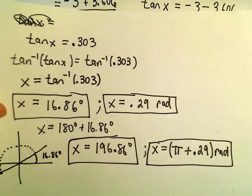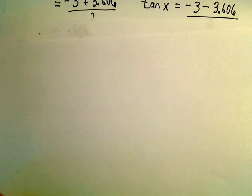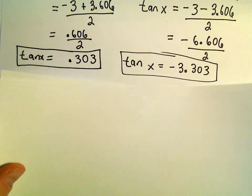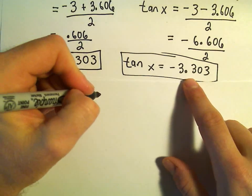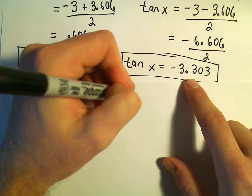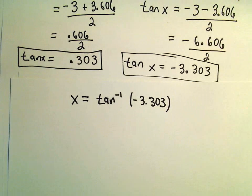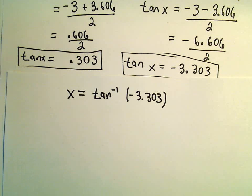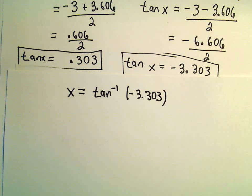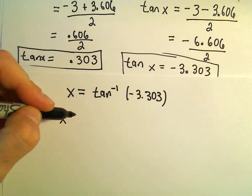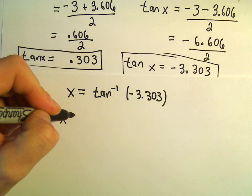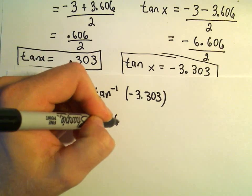Now let's evaluate tangent x equals negative 3.303. Taking the inverse tangent of both sides, we get x equals inverse tangent of negative 3.303. Doing this in degrees, I'm getting approximately negative 73.16 degrees.